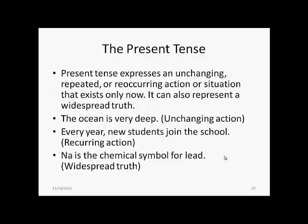The present tense expresses an unchanging, repeated, or recurring action or situation that exists only now, and can also represent a widespread truth. For example: 'the ocean is very deep' (an unchanging action), 'every year new students join the school' (a recurring action), 'Na is the chemical symbol for lead' (stated as a widespread truth). As an aside, Na is actually the symbol for sodium — for lead, the symbol is Pb, from plumbum.